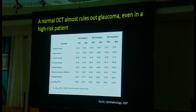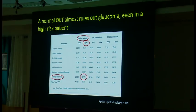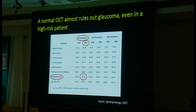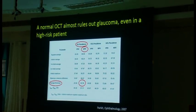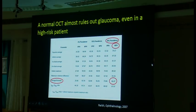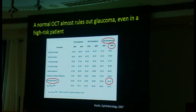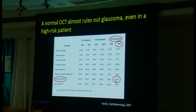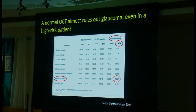Even in a higher risk patient, a normal OCT almost always rules out glaucoma. A study by Roger Parikh found that at a five percent prevalence for glaucoma, if you look at average RNFL thickness and have a negative scan, the negative predictive value — meaning the likelihood that person really does not have glaucoma — is 98%. Even in a significant glaucoma suspect with about a 30% prevalence, if they have a negative scan, the negative predictive value is 85%. So if somebody has a normal OCT, it's almost certain they don't have glaucoma.